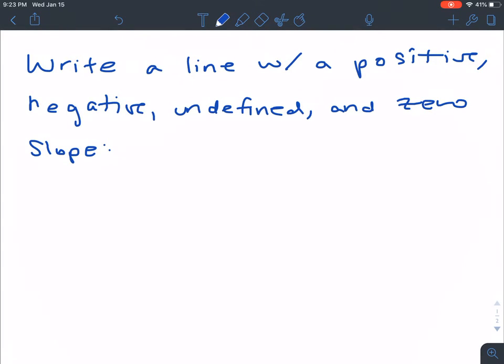Alright guys, so for today's bellwork, I want you to write a line with a positive, negative, undefined, and zero slope.